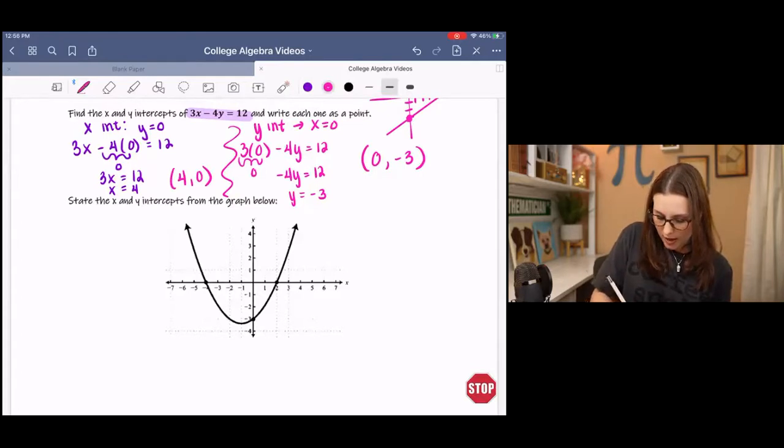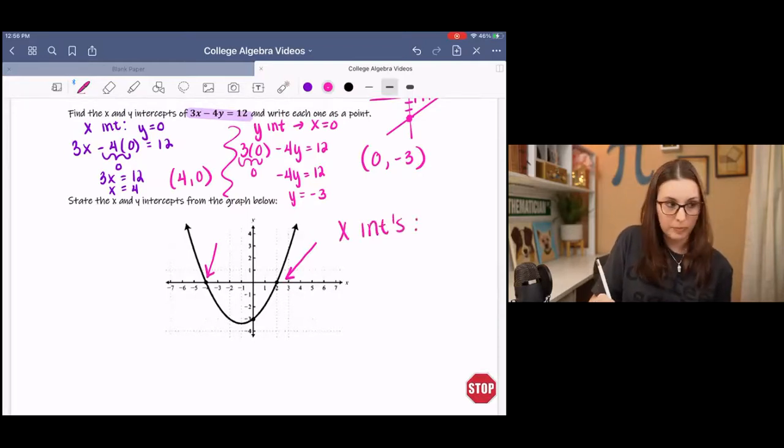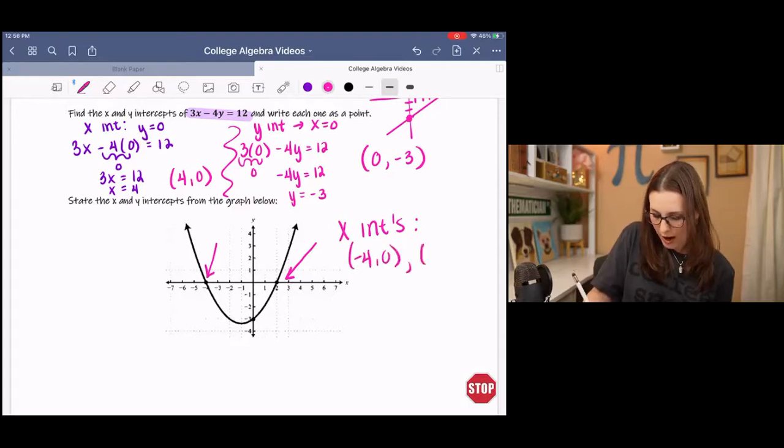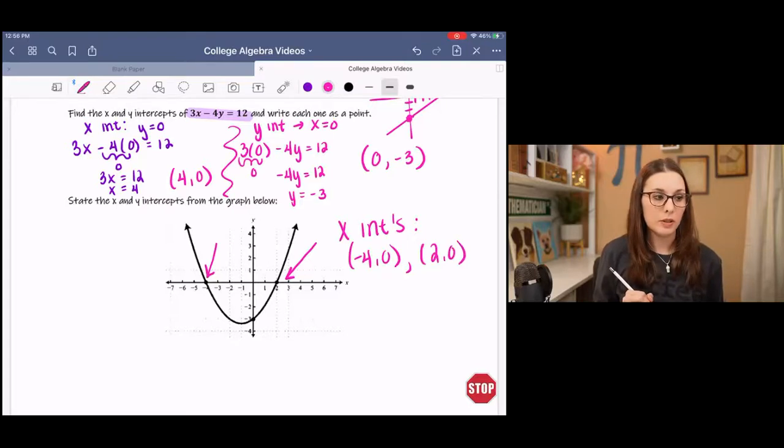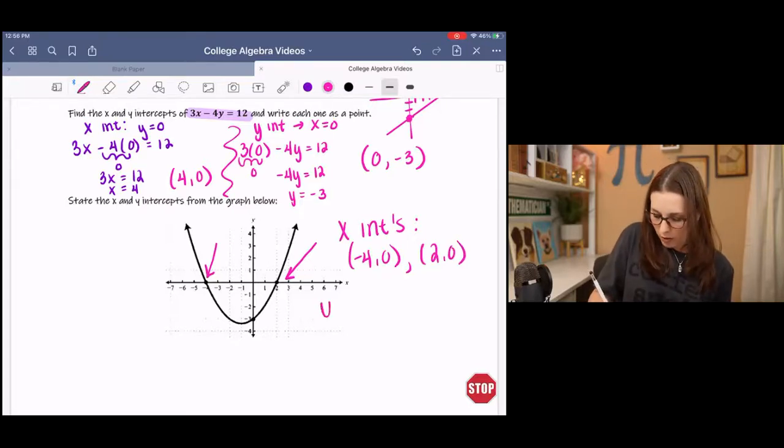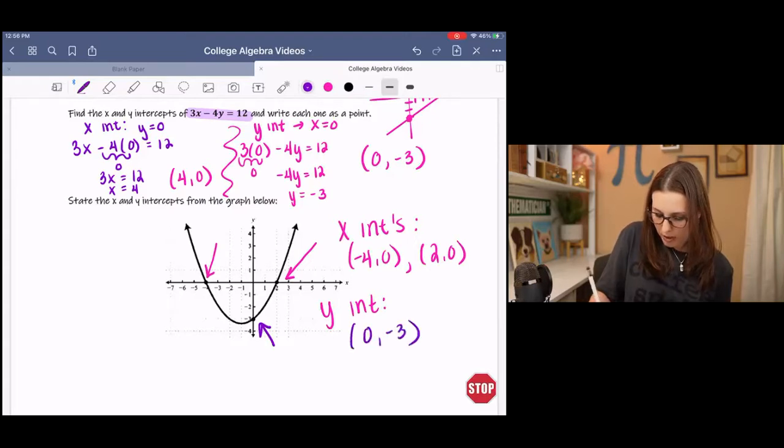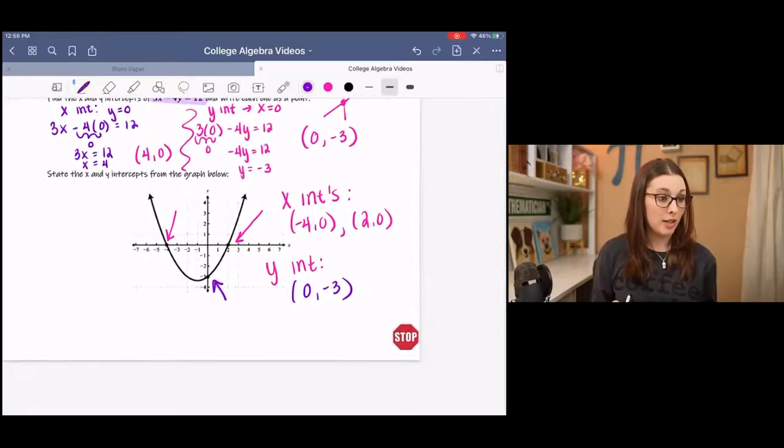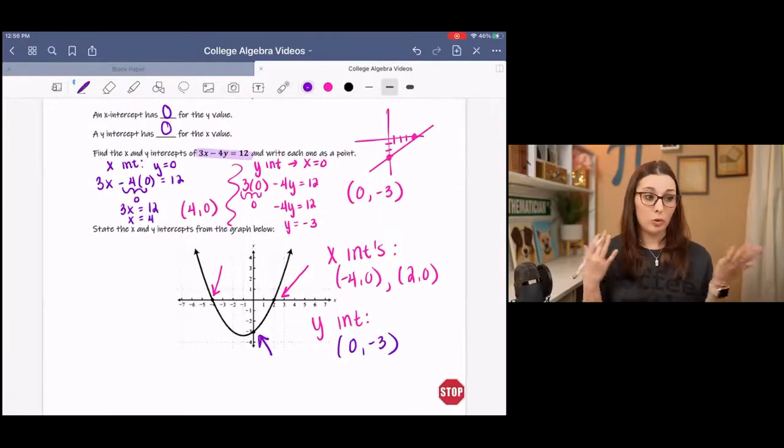So we can see that the graph crosses the x-axis here and here. Which means I have two x-intercepts. We have one at negative 4, 0, and one at 2, 0. And then we only have one y-intercept. And that is here. We go over 0, down 3. And that, I believe, is all it wanted. Yeah, that's all it wanted. So that's it. That's your answer.